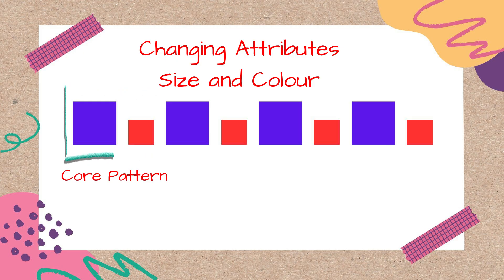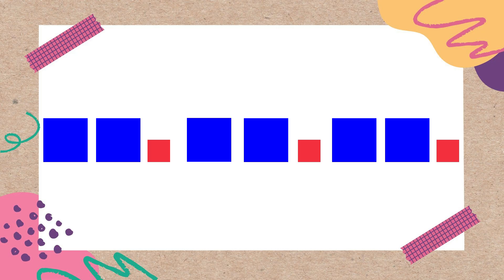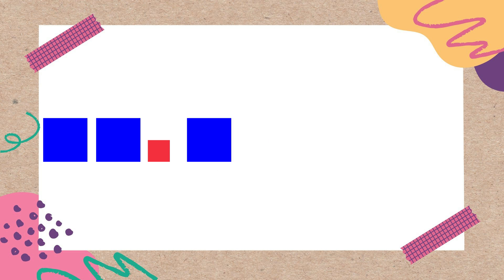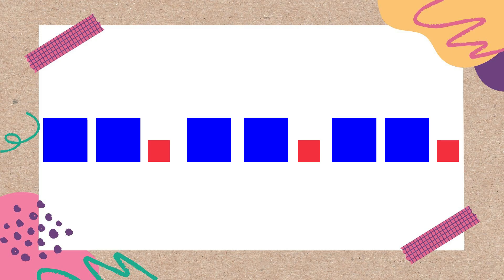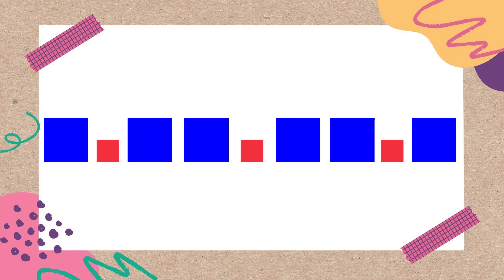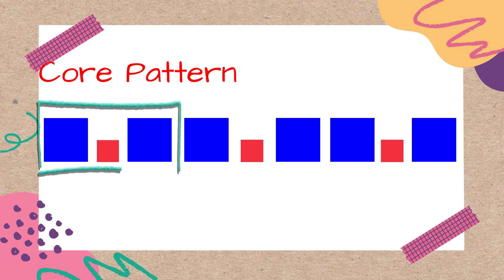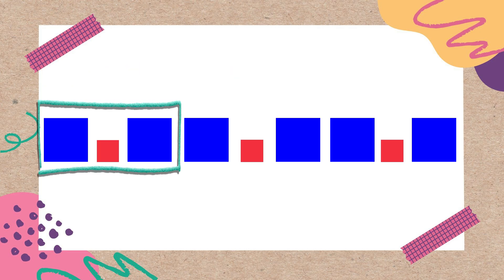Read the next pattern and identify the core pattern: big square, big square, small square — repeating. So the core pattern here is big, big, small square. Now read this pattern: big square, small square, big square — this is repeating several times, so this is the core pattern. By seeing the core pattern, you can continue or repeat the sequence.